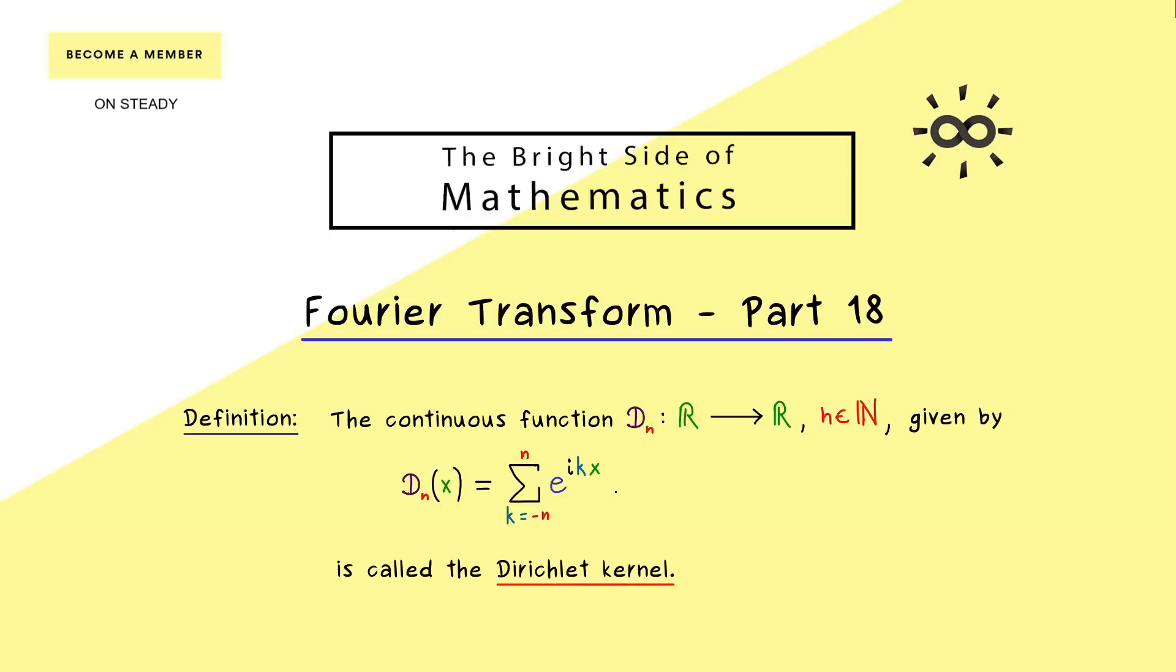So you see, this is quite a simple definition, and you might remember that we have already calculated with that in part 11. There we have seen that we can write this whole sum also with cosine functions. Namely, it's the constant 1 plus 2 times a sum of cosine functions. And with that representation, you immediately see that the outcome is a real number again.